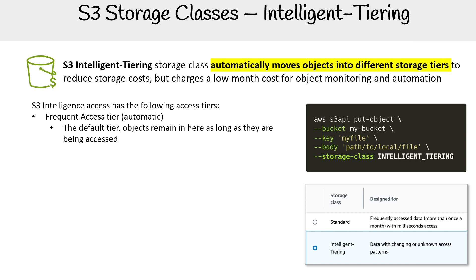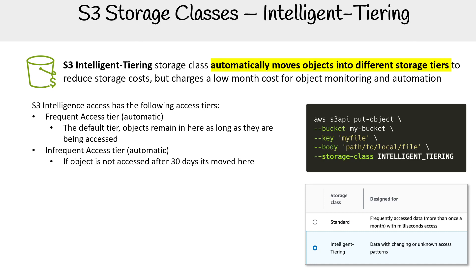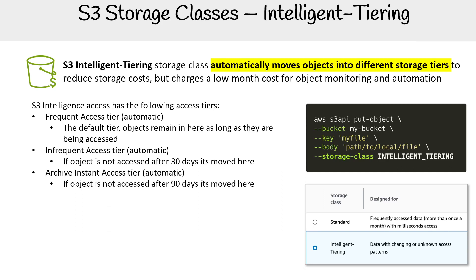The frequent access tier is the default tier — you can think of it as S3 Standard. Objects are going to remain here as long as you are accessing them. If you do not touch them for 30 days, they're going to get moved into the infrequent access tier, which is S3 Standard-IA. If you don't touch them for 90 days, it's going to be moved into the archive instant access tier, which is S3 Glacier Instant Retrieval.